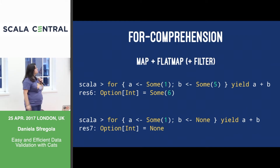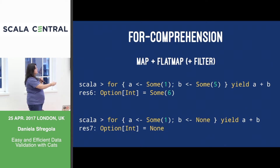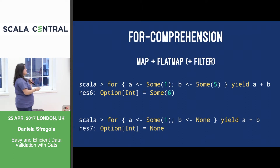Syntactic sugar in Scala: if you have a map and a flatMap, you can write things in a for comprehension, basically concatenating all the containers together. In the first example, we have Some(1) so 'a' is going to be 1; the second line, Some(5) so 'b' is going to be 5, and then we combine both of them. What happens if one of the two values in my chain is None? Well, the chain is going to break — the whole thing is going to be None.